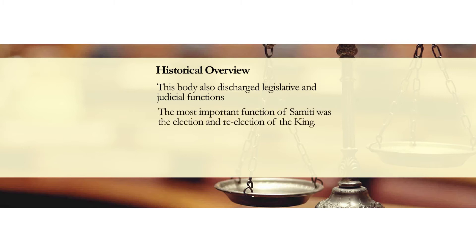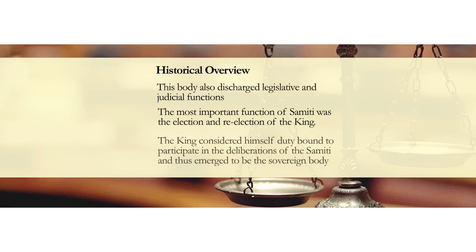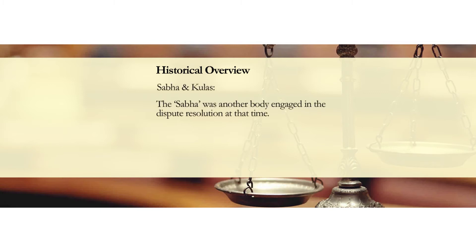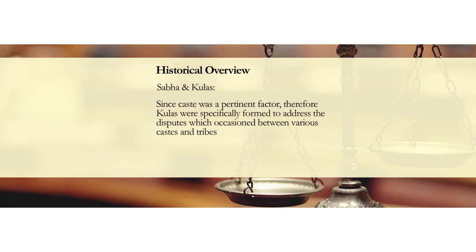The most important function of Samithi was the election and re-election of the king. The king considered himself duty bound to participate in the deliberations of the Samithi, which was thus assumed to be the sovereign body. Another such body involved in informal dispute resolution was Sabha and Khula. Sabha consisted of selected persons and was presided over by a king, and its resolutions were considered binding on all persons. Khula was specifically formed to address disputes between various castes and tribes.